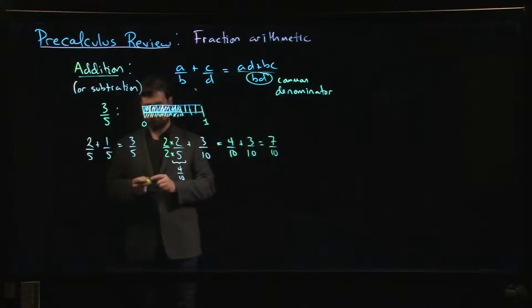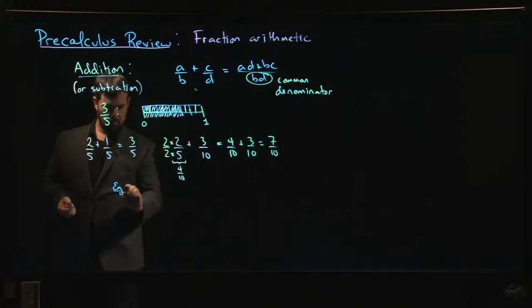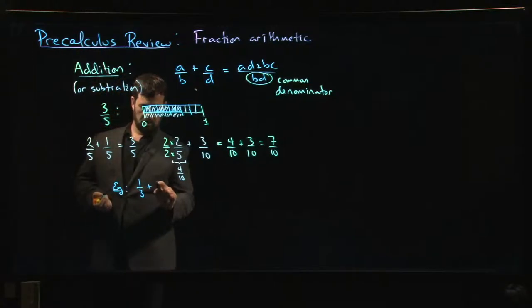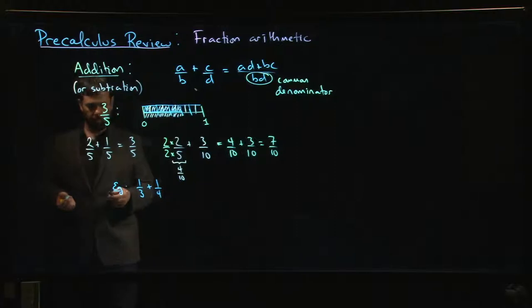The most complicated scenario when you're adding numbers is when you've got two different denominators and neither one is a multiple of the other. So you're adding something like one-third plus one-quarter.